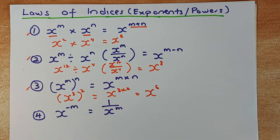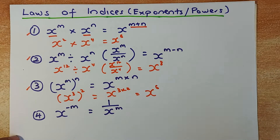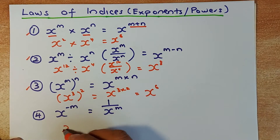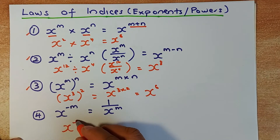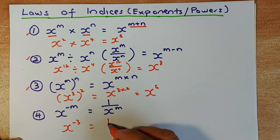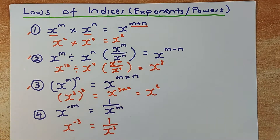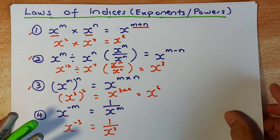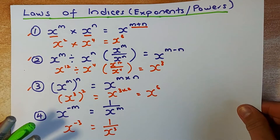The last rule involves negative powers. Remember, all negative powers in your answers have to be converted to positive powers in NCEA Level 2. So X to the minus M — for example, X to the minus 3 — is just 1 divided by X cubed. Those are the 3 or 4 laws of indices that you need to know.